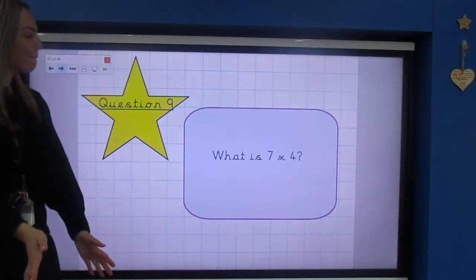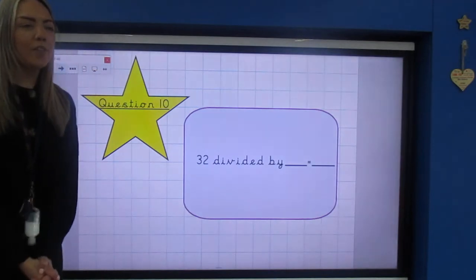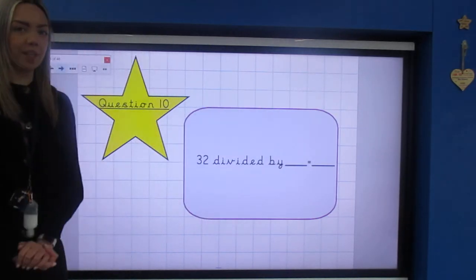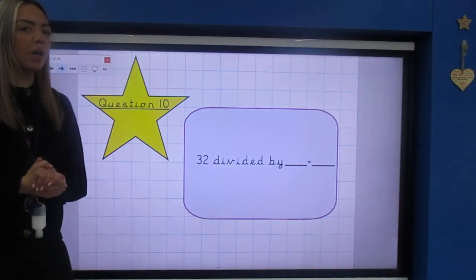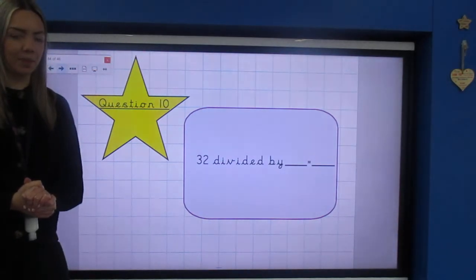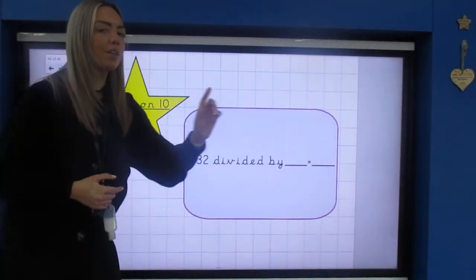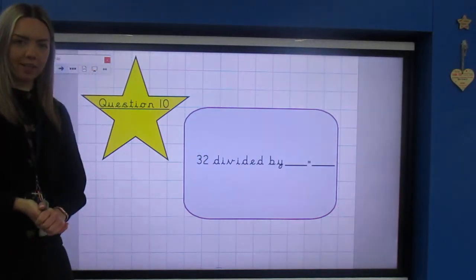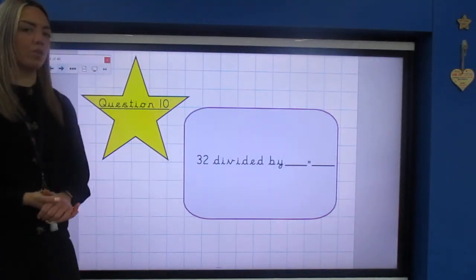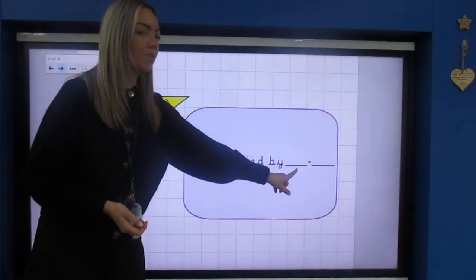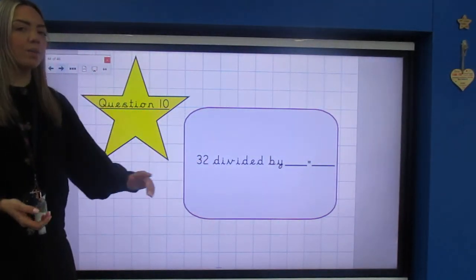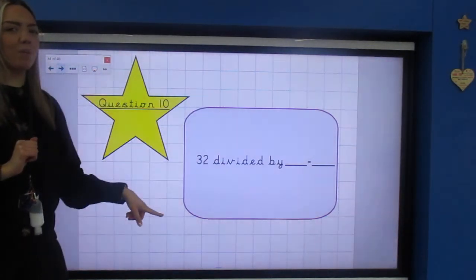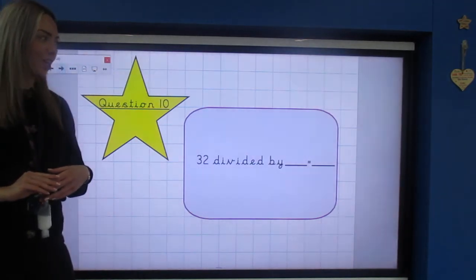Last but not least, question number 10. This is the trickiest one of all: 32 divided by something equals something. Now there might be more than one way that 32 can be divided, so as long as your two answers are correct you will get a point. Bonus point if you can give me more than one answer because I know there is more than one way to solve that problem. For every answer you give me for question 10 you will get an extra point, so this question could really see you soaring to the top of the leaderboard.